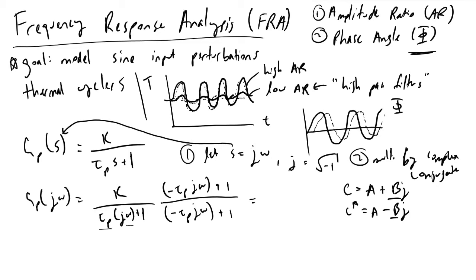When we multiply all this stuff out, what we will find, recalling the definition that j squared is equivalent to minus one, is the following. We will have tau p squared times omega squared plus one divided by, or over minus k times tau p times j omega plus k.